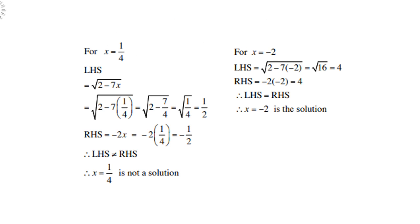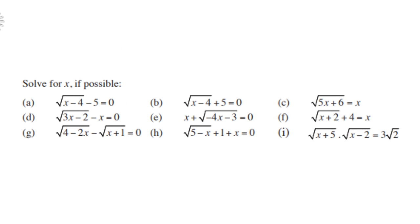It is important to check whether each answer is actually a solution. Testing x equals one quarter: substituting into the left-hand side gives one half, but the right-hand side gives negative one half — left-hand side does not equal right-hand side, so x equals one quarter is not a solution. Testing x equals negative 2: the left-hand side gives 4 and the right-hand side also gives 4, so left-hand side equals right-hand side. Therefore the acceptable solution is x equals negative 2.